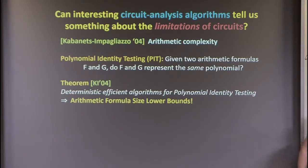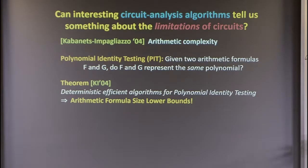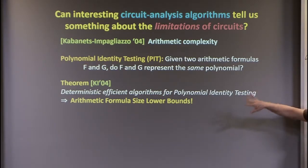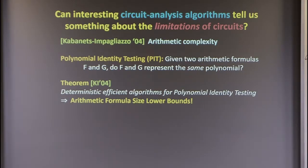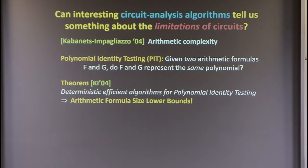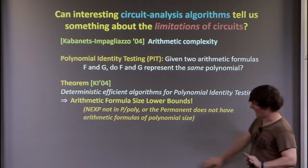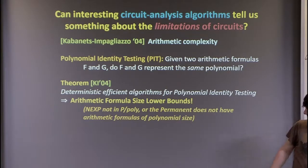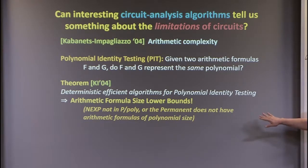A really influential theorem of Valentin and Russell from 2004 connects circuit analysis algorithms — specifically polynomial identity testing — for arithmetic formulas with formula lower bounds. They show that sub-exponential time algorithms for polynomial identity testing on formulas will get you formula size lower bounds. On circuits you get circuit lower bounds. More formally, either NX is not in P/poly or the permanent does not have arithmetic formulas of polynomial size.